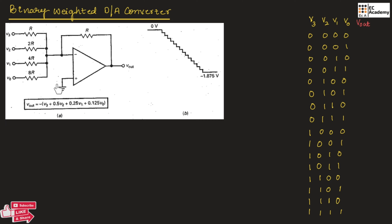The figure shows the binary weighted digital to analog converter. Here, we are considering three inputs which will have binary values. These inputs can have either the value 1 or 0. These three inputs are connected to the inverting terminal of an op-amp. The non-inverting terminal is connected to ground. From the output, we take feedback through a resistor R. For each input channel, we connect resistors: the first channel has resistor value R, the second channel has 2R, the third channel has 4R, and the fourth channel has 8R.